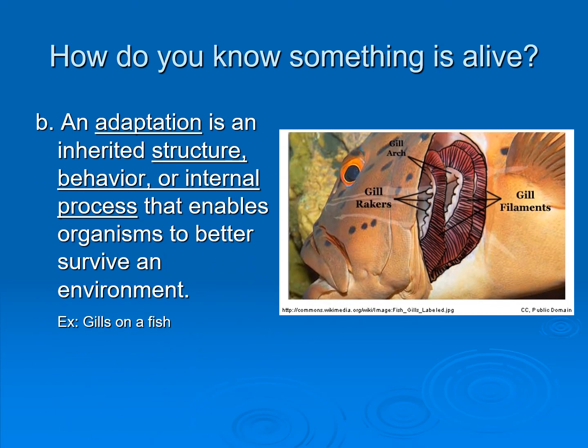An adaptation, though, is not a response to a stimulus or maintaining homeostasis — it's a change in structure or internal processes that allows us to better survive in the environment. Fish gills have adapted so that they can breathe underwater. An adaptation is a change in structure, behavior, or internal process so that we can survive in a particular environment. When we learn about Darwin's birds and how their beaks are all different based on what they eat, that is an example of adaptation to better survive their environment.